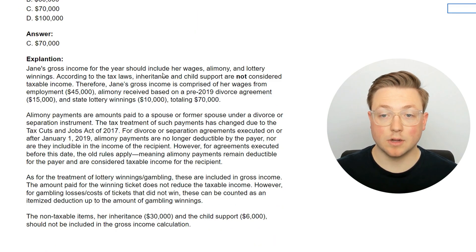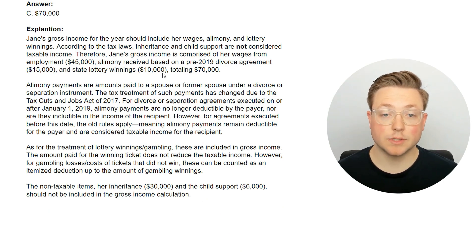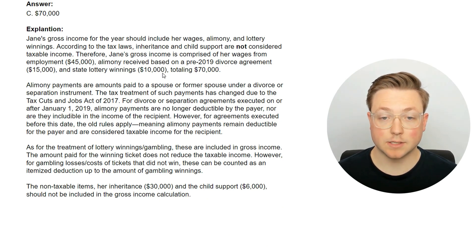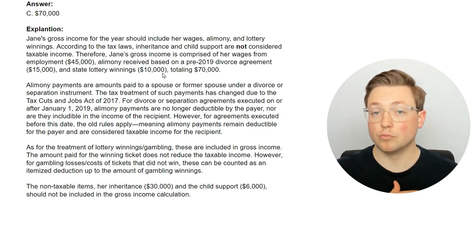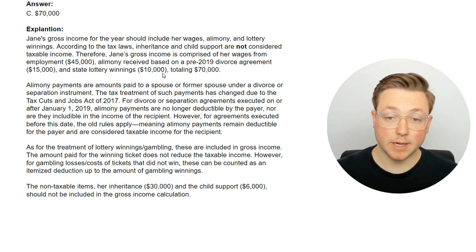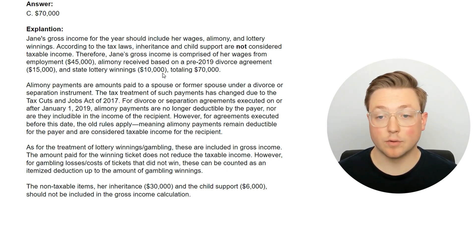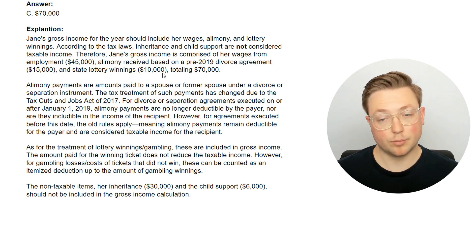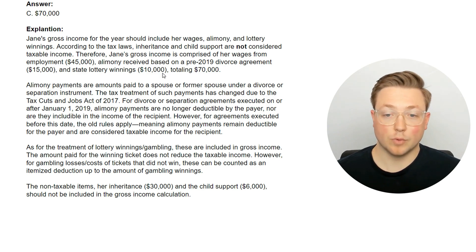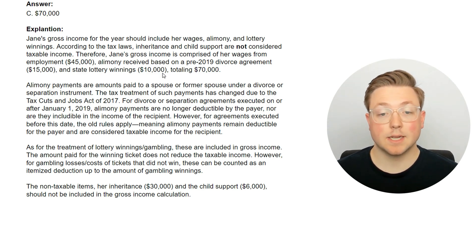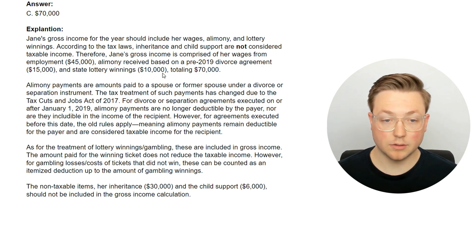Here's the answer: $70,000. Jane's gross income for the year should include her wages, alimony, and lottery winnings. According to the tax laws, inheritance and child support are not considered taxable income. Therefore, Jane's gross income is comprised of her wages from employment, alimony received based on the pre-2019 divorce agreement, and state lottery winnings of $10,000, totaling $70,000.